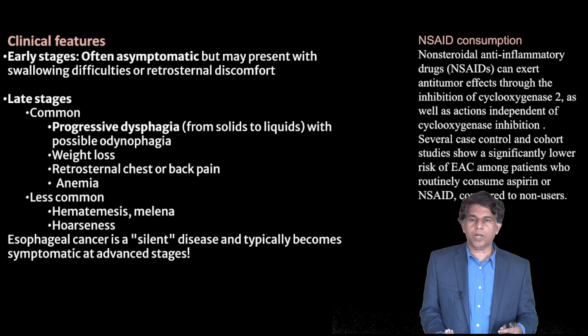Recently approved drugs for esophageal cancer include Keytruda (pembrolizumab), a highly selective humanized monoclonal IgG4 antibody that blocks the PD-1 receptor, preventing binding and activation of PD-L1 and PD-L2. This causes activation of T-cell mediated immune response against tumor cells. Other drugs include Opdivo (nivolumab), and combination regimens approved for gastroesophageal junction cancer such as Cyramza (ramucirumab) with docetaxel, as well as trifluridine and tipiracil hydrochloride.